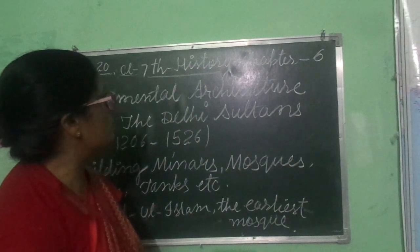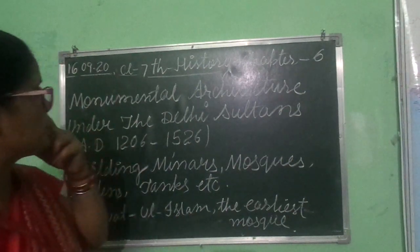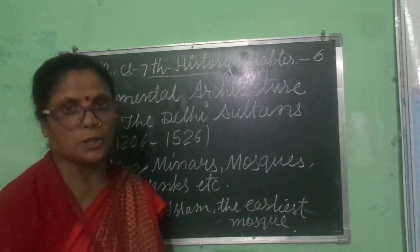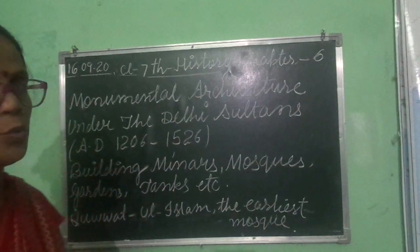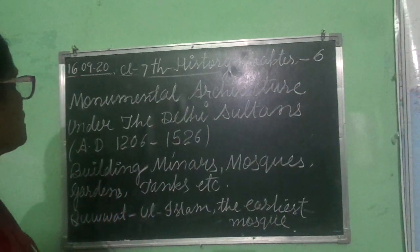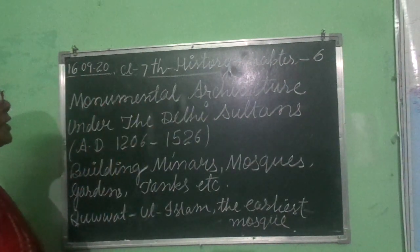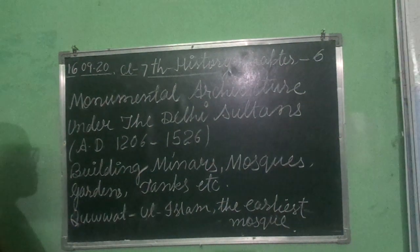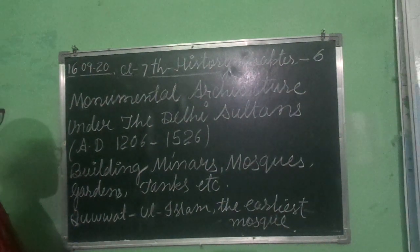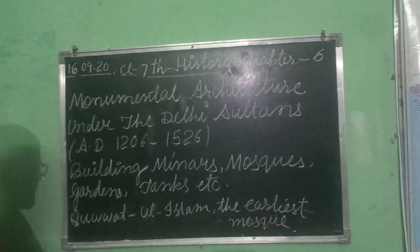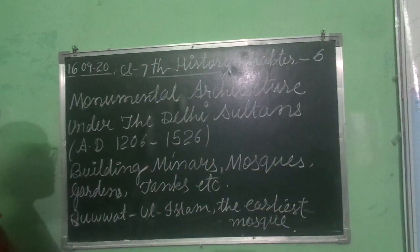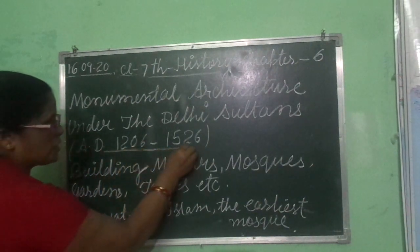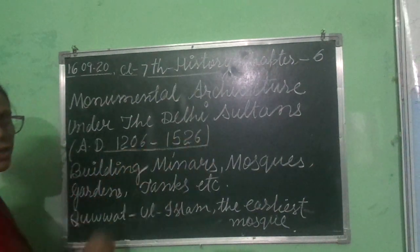In this chapter we have already studied some important topics, and today we are going to start monumental architecture under the Delhi Sultans from AD 1206 to 1526. Remember this date.